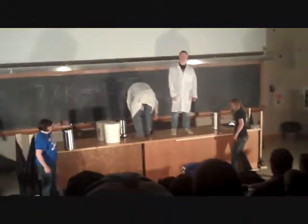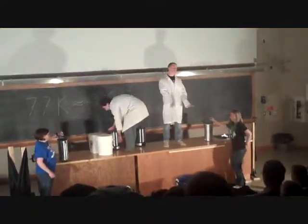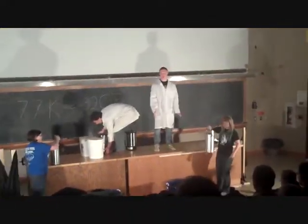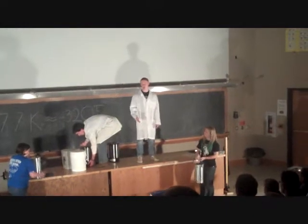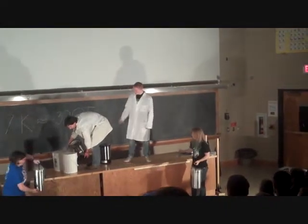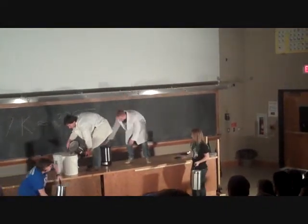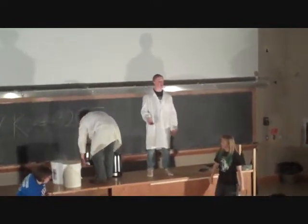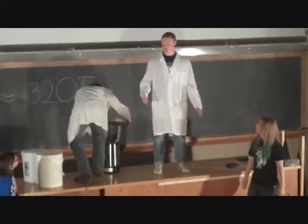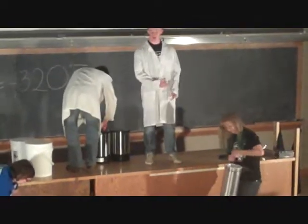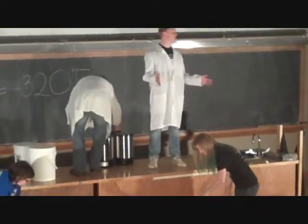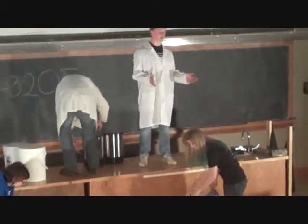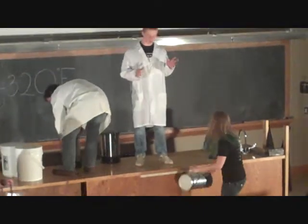Currently, this liquid nitrogen is about 77 Kelvin, which is negative 320 degrees Fahrenheit. We also have some boiling water, which boils at about 100 degrees Celsius, or about 212 degrees Fahrenheit. So the difference in temperature between these two is about 500 degrees Fahrenheit, which is quite a substantial difference.